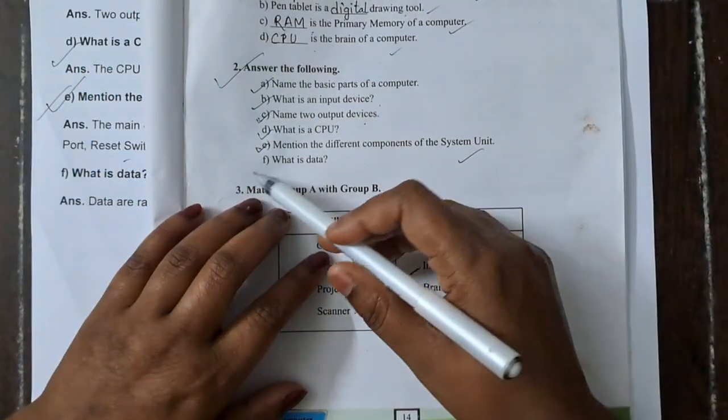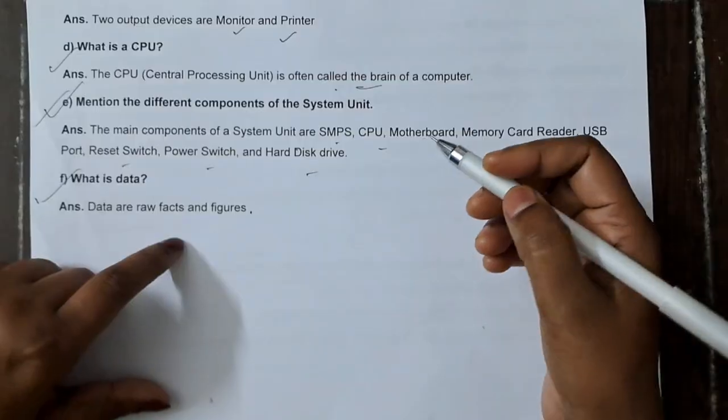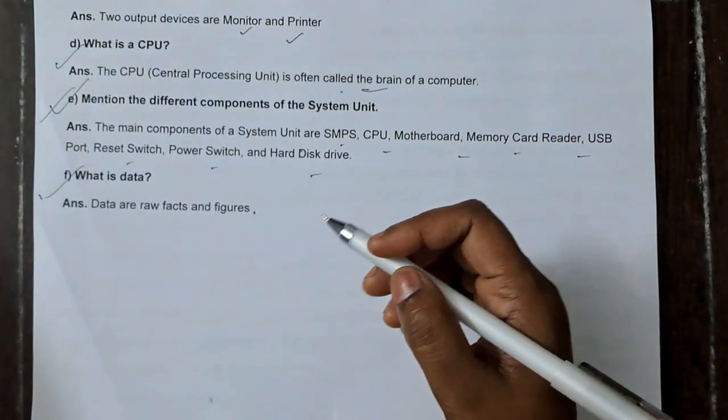What is data? Data are raw facts and figures.